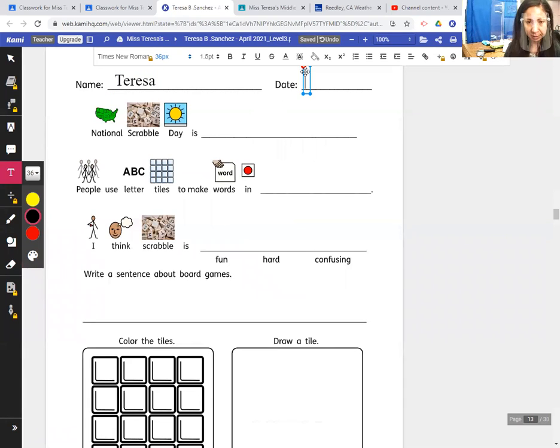Okay, and the date. So today is April 13, 21, so it's 4-13-21. And National Scrabble Day is today, April...